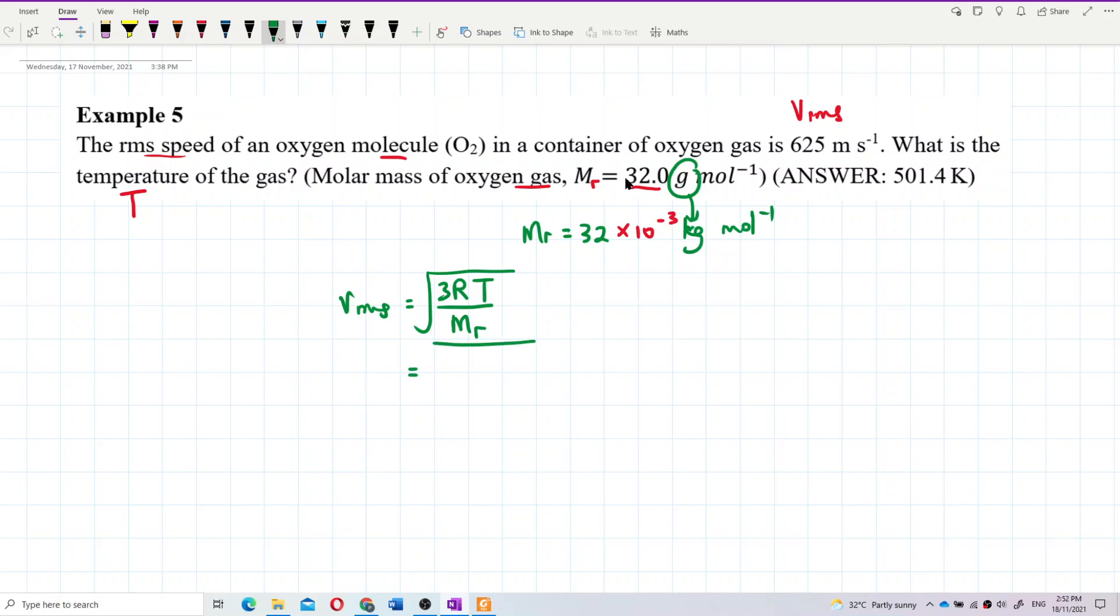R is 8.31, temperature is what we want to find, and molar mass is 32 gram per mole - change to kilogram. Remember, change to kilogram. Students make mistakes when they don't change to kilogram. This is in kilogram per mole.